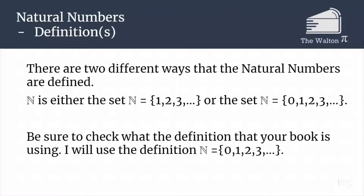To start off, we need to establish what the natural numbers are. This is a bit confusing because there are two common definitions. You can either have the natural numbers be the set of integers starting at 1, or the set of integers starting at 0 — so either {1, 2, 3, 4, ...} or {0, 1, 2, 3, 4, ...}. If you are trying to figure out how to go about a proof for your specific class, be sure to check what the definition of the natural numbers is for your class, but I am going to be using the definition of the natural numbers starting at 0.